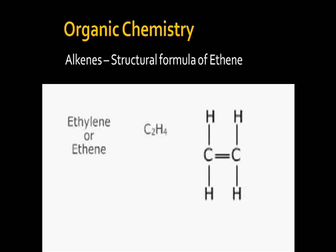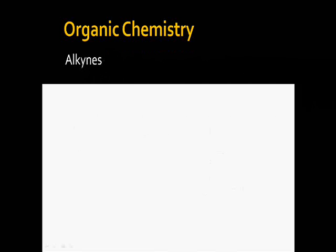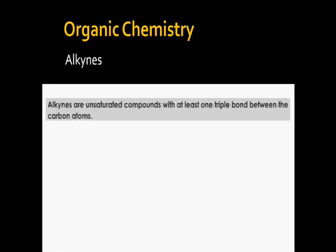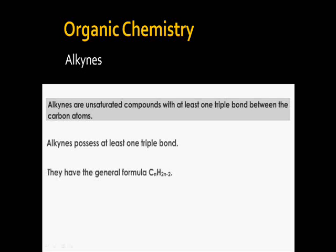The structural formula of ethene shows a carbon-carbon double bond, and every carbon atom is tetravalent. Alkynes are unsaturated compounds with at least one triple bond between carbon atoms. They have the general formula CnH2n-2. Ethyne, propyne, and butyne are examples of alkynes.